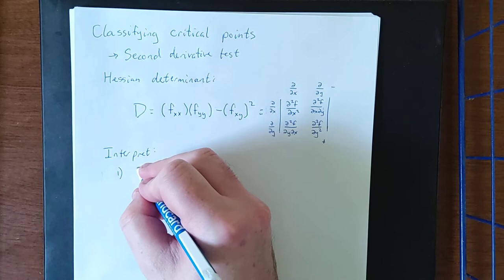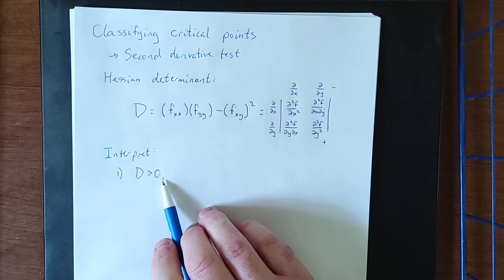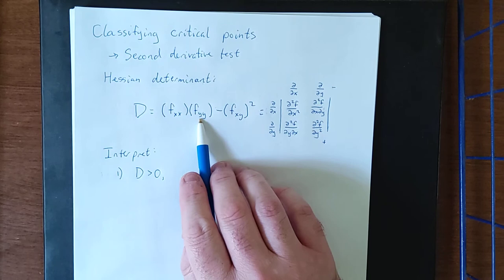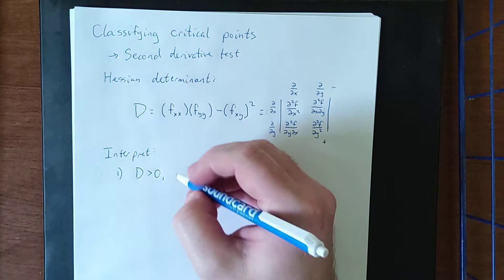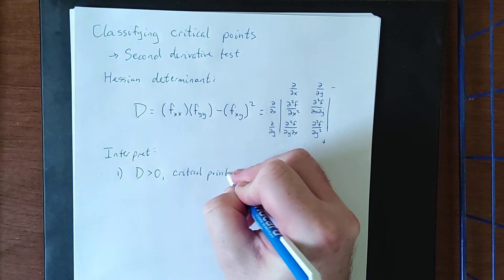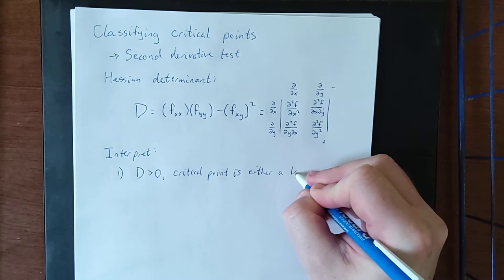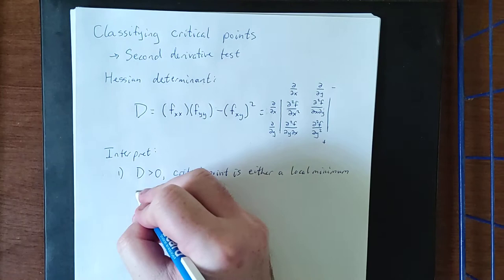So situation number one, if d is greater than zero, there are generally going to be two situations where this occurs. The second derivatives both indicate that the curve is concave up, or they are both negative, and so it would be concave down. So the critical point is either a local minimum or a local maximum.